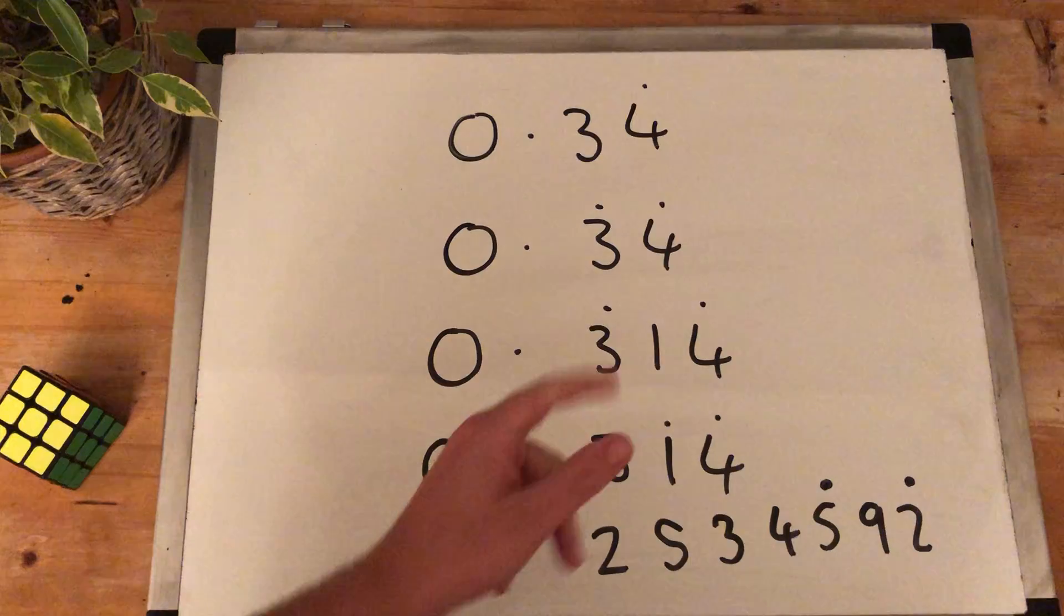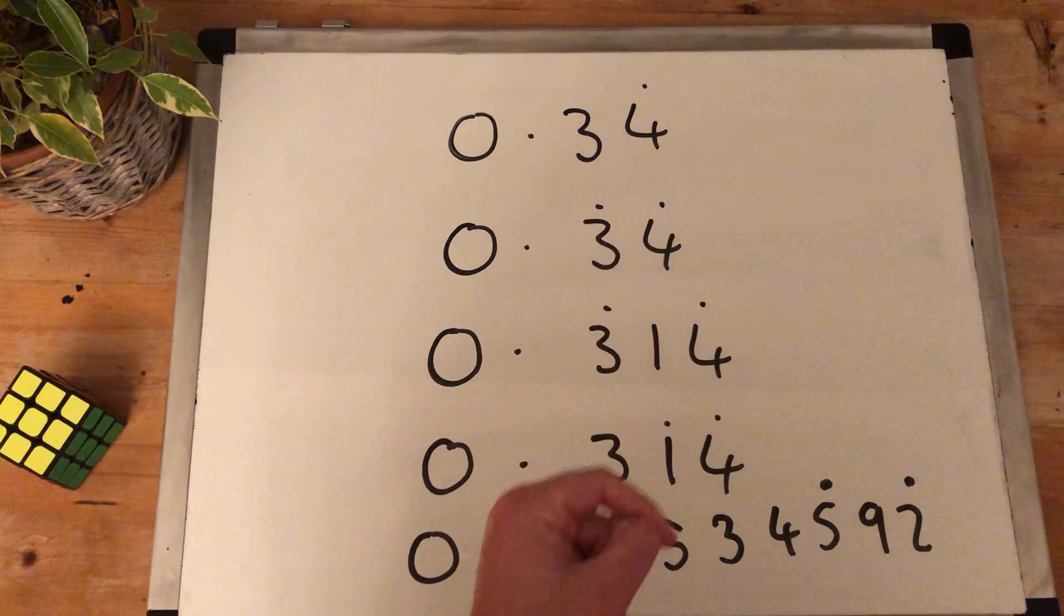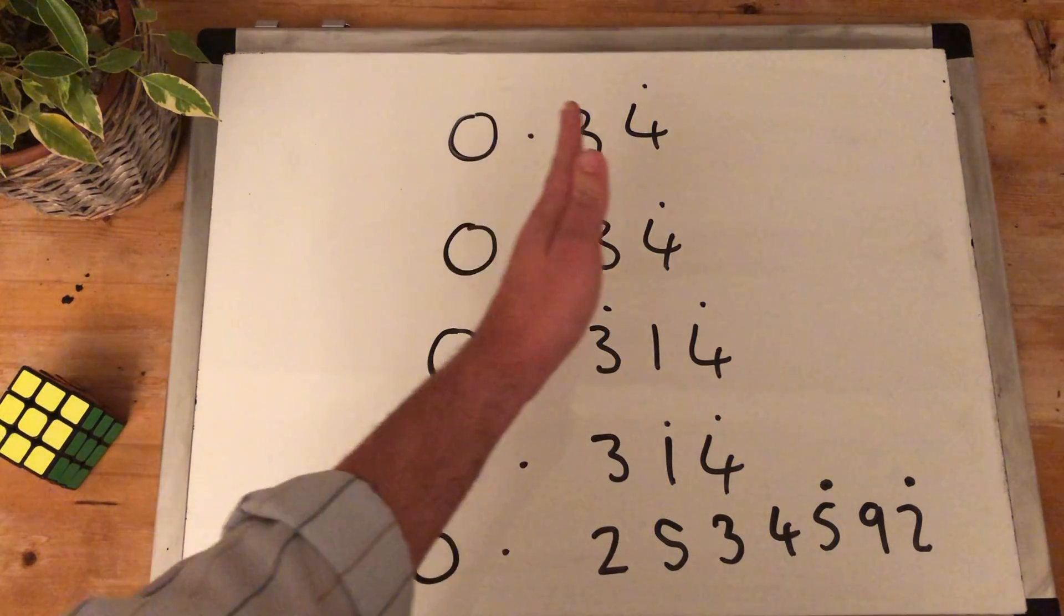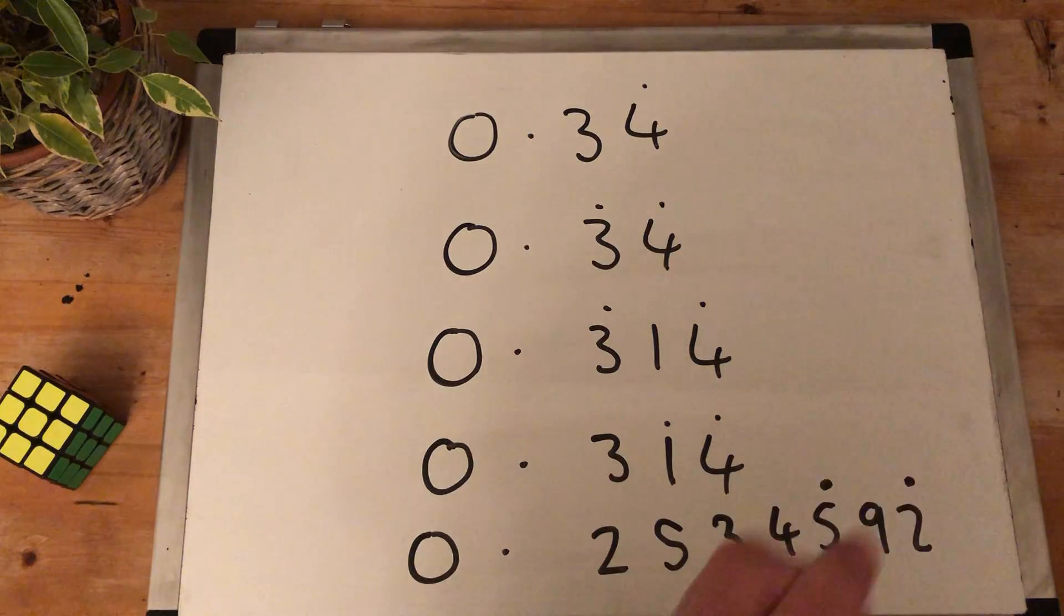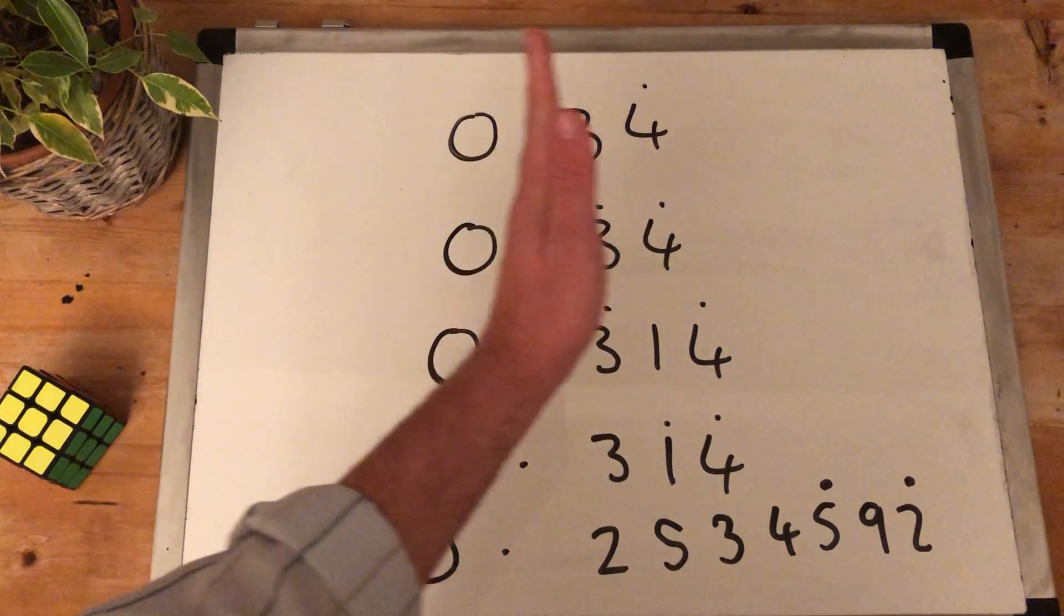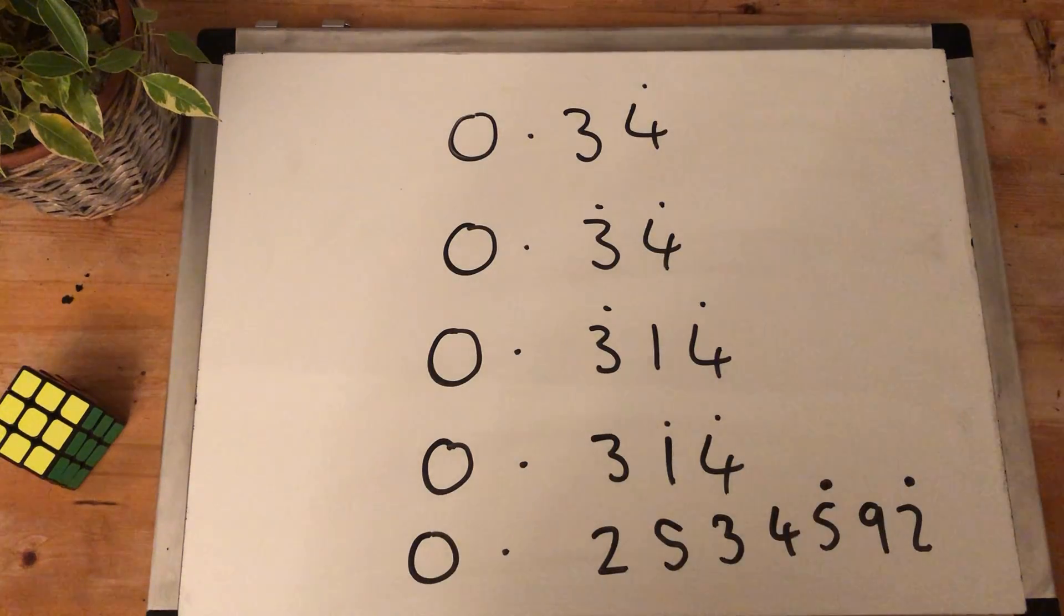0.34 where the recurring symbol is only above the 4. So this number here is 0.344444 forever. It's only above the 4 so it's 0.344444, only the 4 is repeating.